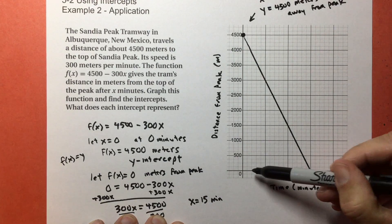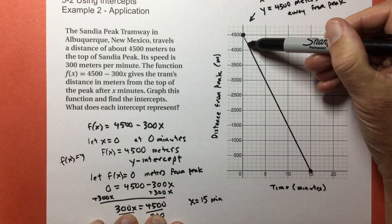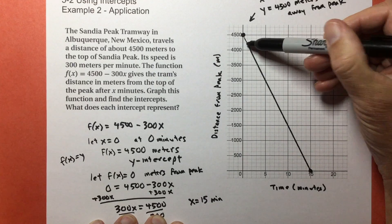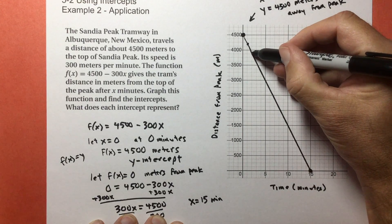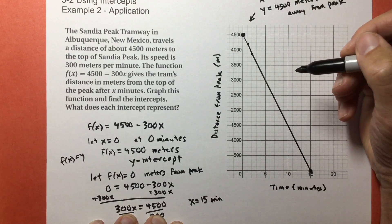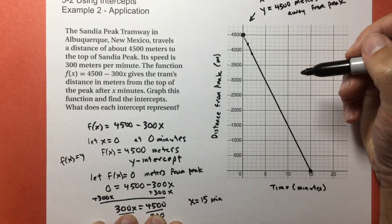So at one minute, you're right here, which is going to be at 4200. At two minutes, you're going to be right here, which is at 3900 meters.